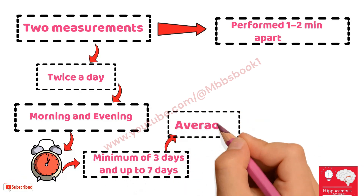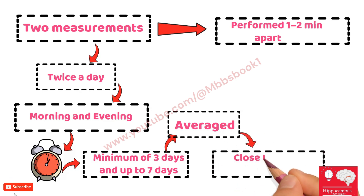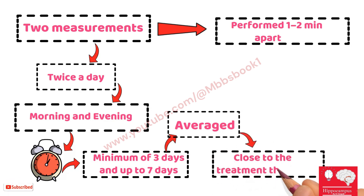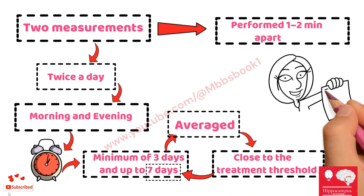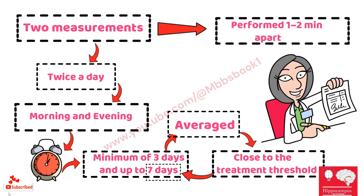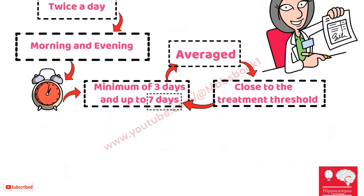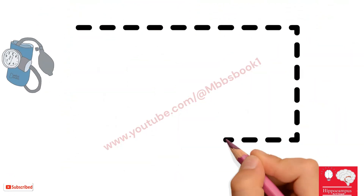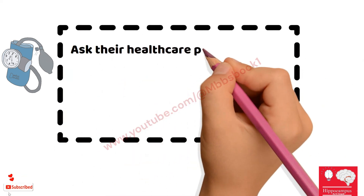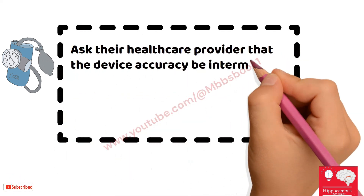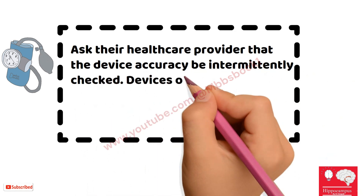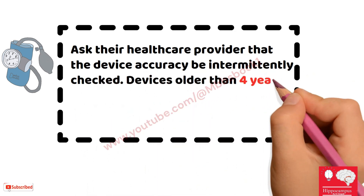This should be done for a minimum of three days and up to seven days. At the end of the measurement period, all readings are averaged. If the average after three days is close to the treatment threshold, measurement should be continued for the full seven days. Patients should keep a record of their home blood pressure values and ask their healthcare provider to intermittently check device accuracy. Devices older than four years may be inaccurate and should be replaced.